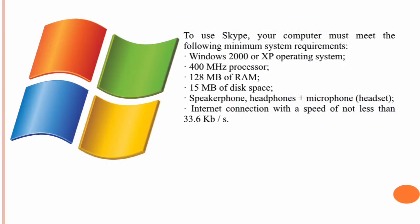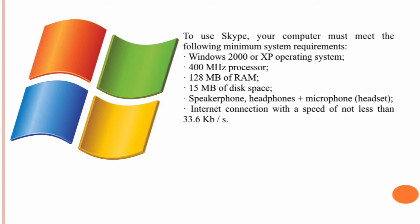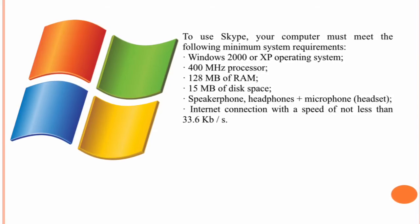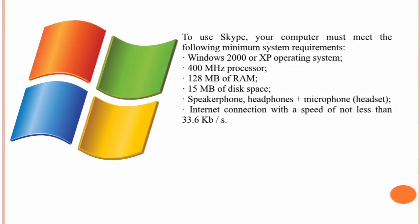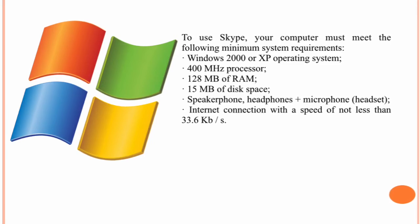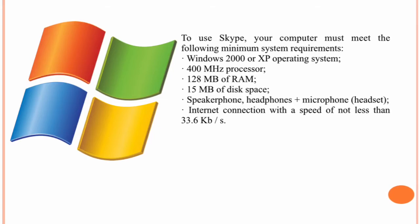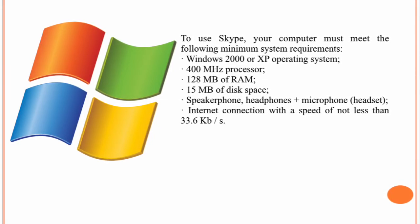To use Skype, your computer must meet the following minimum system requirements: Windows 2000 or XP operating system, 400 MHz processor, 128 MB of RAM, 15 MB of disk space, speaker, headphones plus microphone, and an Internet connection with a speed of not less than 33.6 Kbps. Now, I want to show you the next video about Skype.